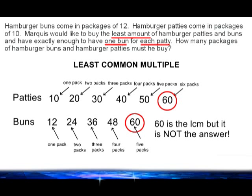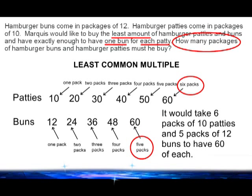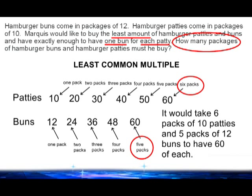The problem specifically asks how many packages of hamburger buns and hamburger patties must he buy. Even though 60 is the least common multiple, in order to arrive at 60 we would have to buy 6 packs of 10 hamburger patties. And for the buns, we would have to buy 5 packs of 12 in order to have 60 hamburger buns. So the answer is that we have to buy 6 packs of hamburger patties and 5 packs of hamburger buns in order to arrive at the least common multiple of 60.